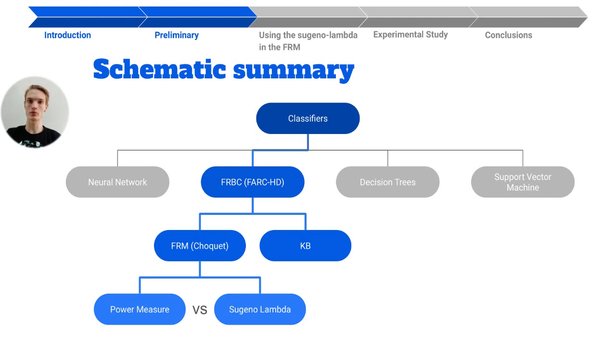and we propose the use of the fuzzy measure Sugeno lambda inside of it to compare with another famous fuzzy measure, the power measure. Having passed the necessary knowledge to better understand what this classifier is and how it is structured, let's go to an example of how the values are aggregated and the data is classified.